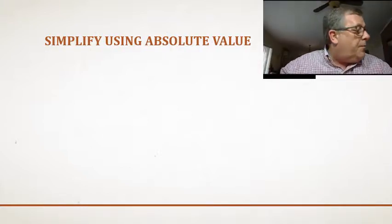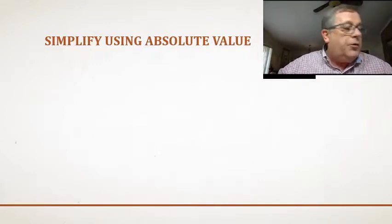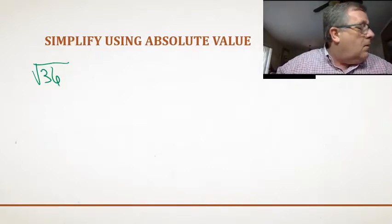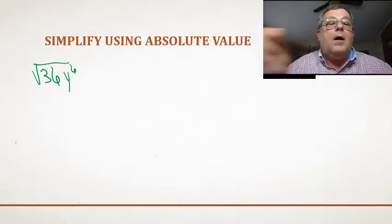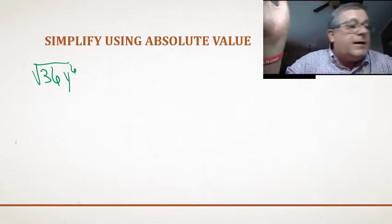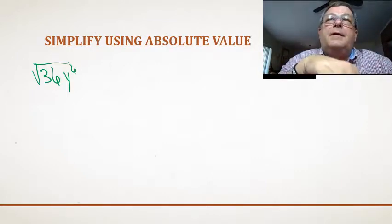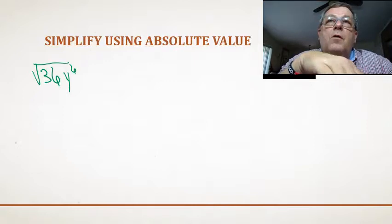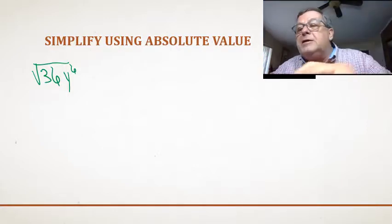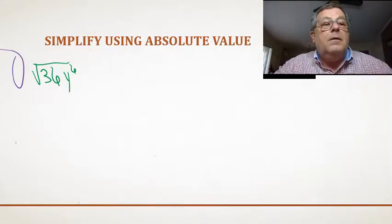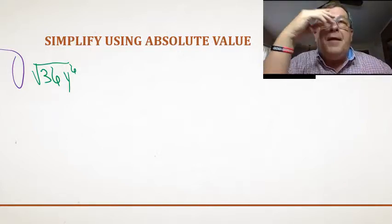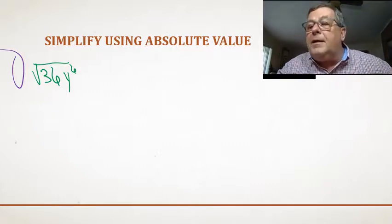Now let's look at a few more, but this time we're going to have to simplify using absolute value. Let's take the square root of 36y to the 6th. Reflecting back — in the first example we had plus or minus in front of the radical, and in the second we had a negative sign. If there is nothing in front of the radical, we assume they're asking for the principal root, and the principal root cannot be negative.